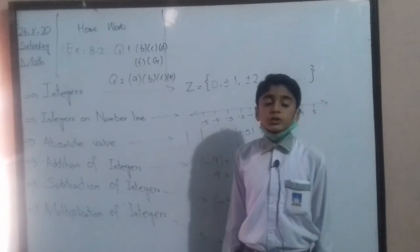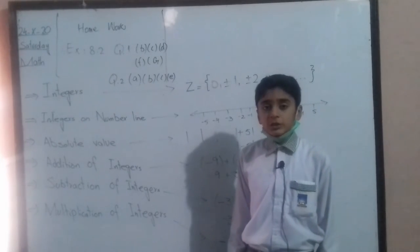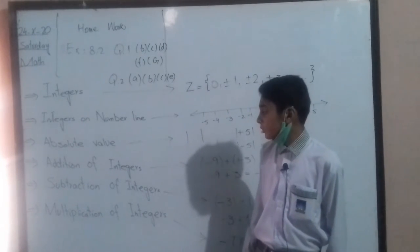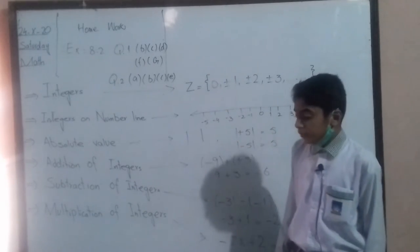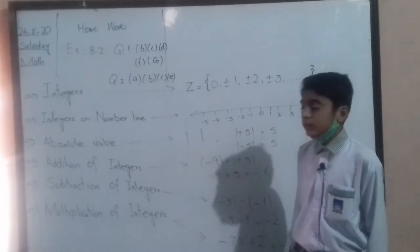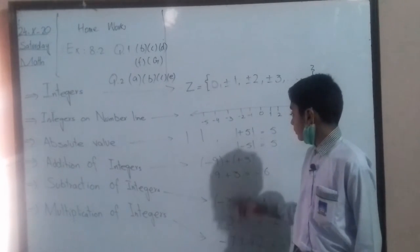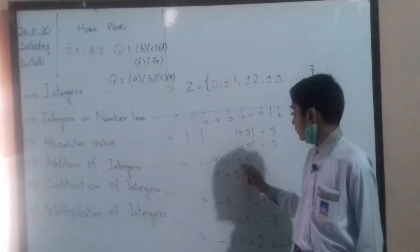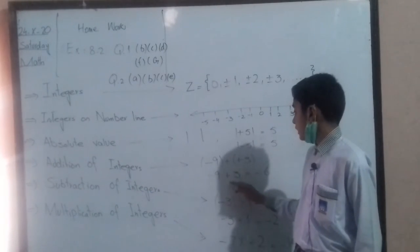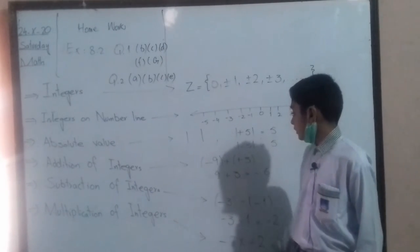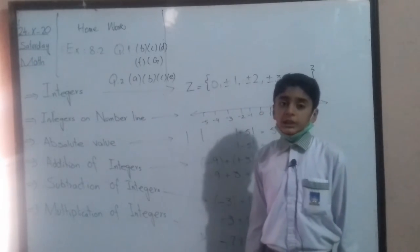Addition of integers. We use the sign of plus between two integers, which is called addition of integers. First of all, we solve the brackets. For example, -9 + (+3) equals -6. We use the sign of the greater value.